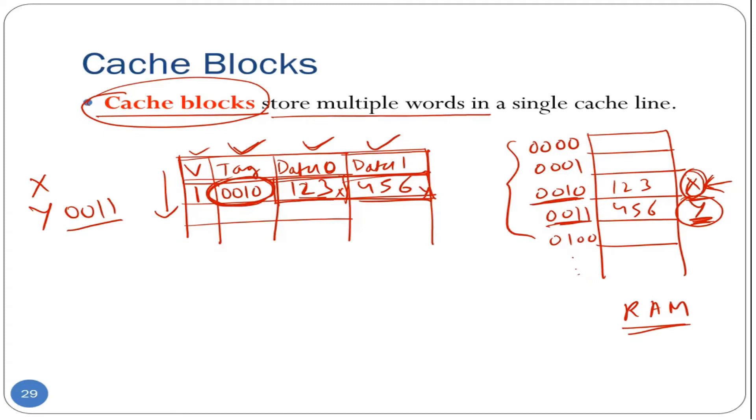Essentially, in the tag field, we need to store only that portion of the memory address, which is common to both X and Y. To make this work, the memory addresses would now be divided into two parts.